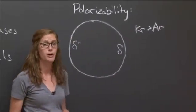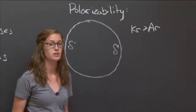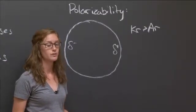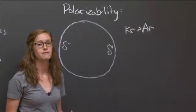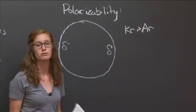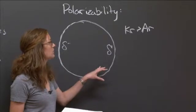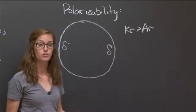As we talked about in part A, even though these had the same type of intermolecular bonds, if one of them exhibits a higher difference in partial charges, as krypton will, then it results in a stronger bond. And so the answer here would be that krypton has a stronger interaction because it is more polarizable.